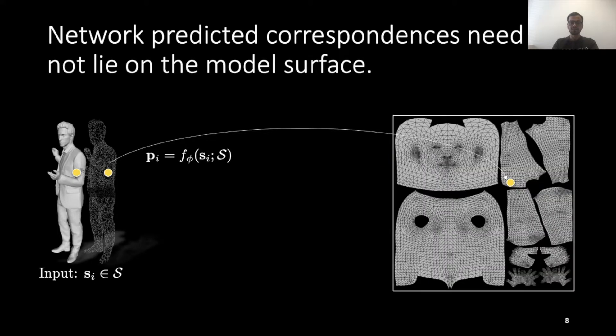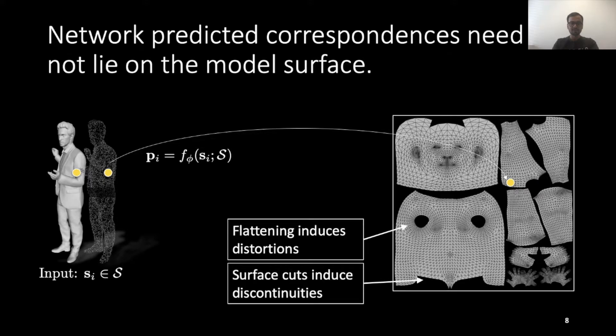Prior work used UV surface parametrization to ensure that the network predictions lie on the surface. But this is problematic because UV parametrization involves cutting and flattening the 3D surface. This induces discontinuities and distortions.